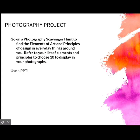The next project option is the photography project. I want you to go on a photography scavenger hunt to find the elements of art and principles of design in everyday things around you. You don't have to go outside — you could do this in your house. Refer to your list of elements and principles — there are 14 total, seven elements and seven principles — and I want you to pick 10. It doesn't matter what combination you pick. You just have to go around, take pictures, and be able to tell me which element or principle each is showing. I would do this in a PowerPoint presentation, which you can upload in the self-reflection Google form to turn it in.